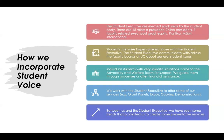Students can raise large systemic issues with the student executive members directly, and when the executives go to their relevant board or faculty meetings they can raise those issues at that platform. Our team — the Advocacy and Welfare team — supports individual students with specific matters such as complaints, guiding them through the university's process, or helping them apply for financial assistance.